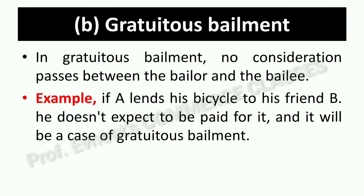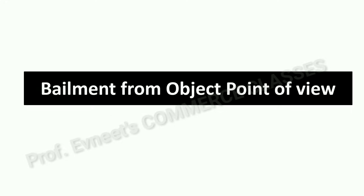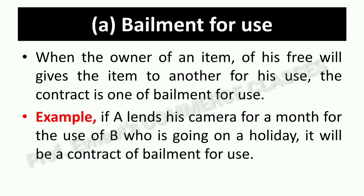From the object point of view, the first type is bailment for use. When the owner of an item of his own free will gives the item to another for his use, the contract is one of bailment for use. For example, A lends his camera for a month for the use of B, who is going on a holiday. A gives his camera to B on hire — B can use the camera but A will charge for it. This is bailment for use.